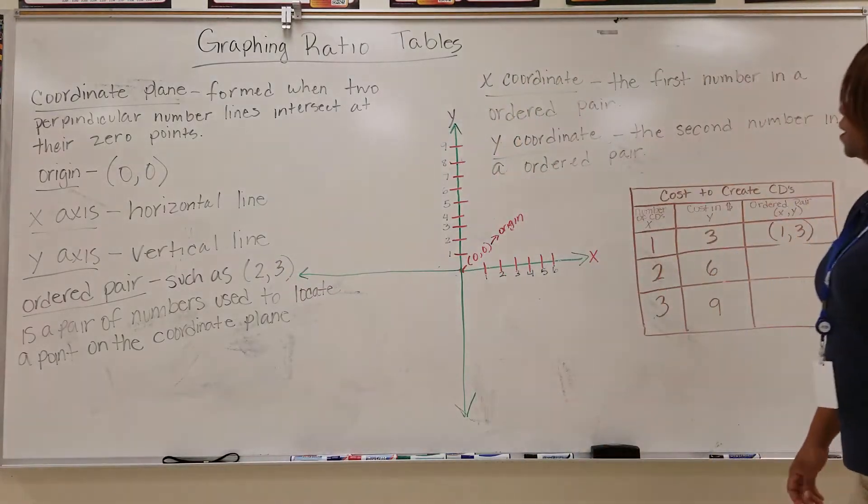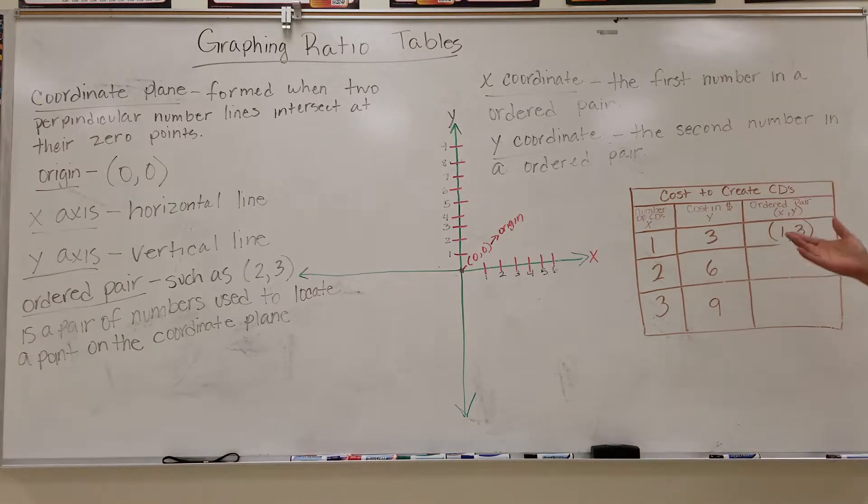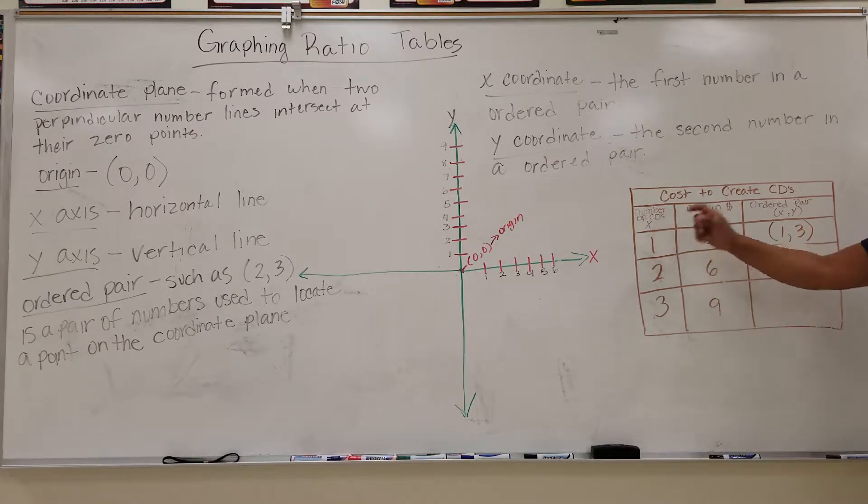So here we have our table. We have the cost to create CDs: the number of CDs, which is going to be our x-coordinate, and the cost in money, which is going to be our y-coordinate. And then you have the ordered pair (x, y). This is where you put the x and y together.